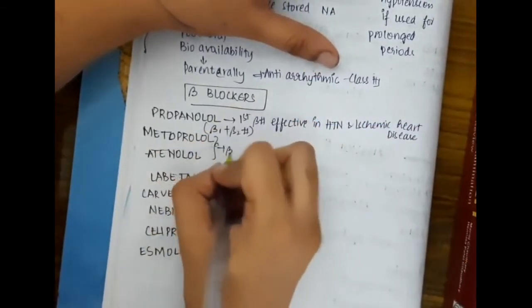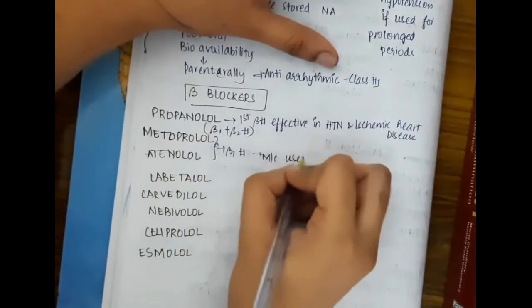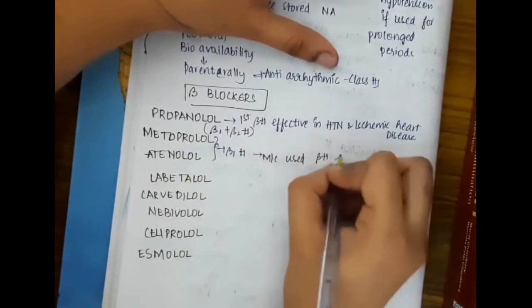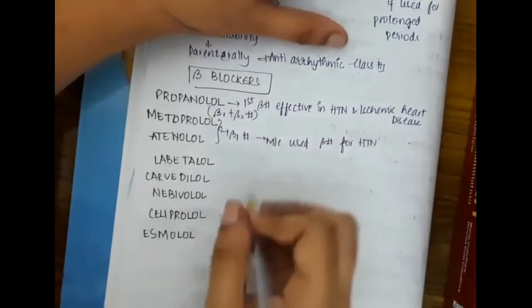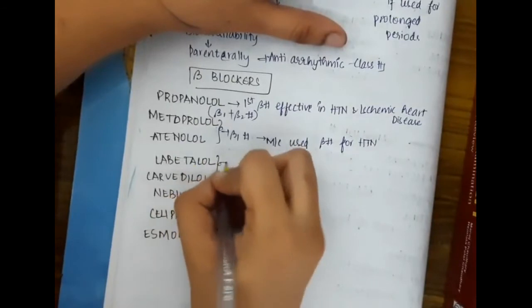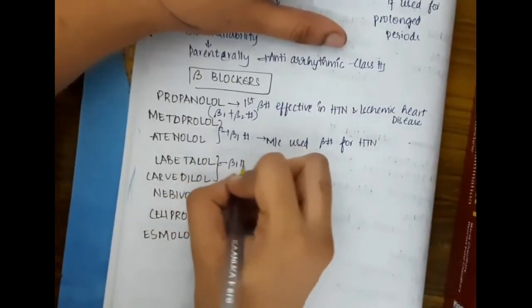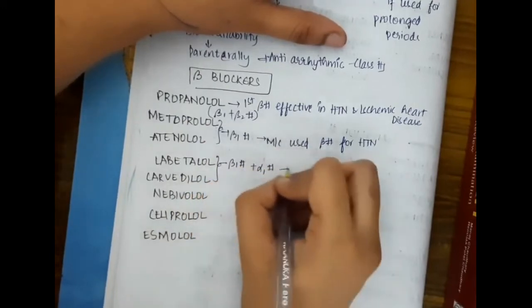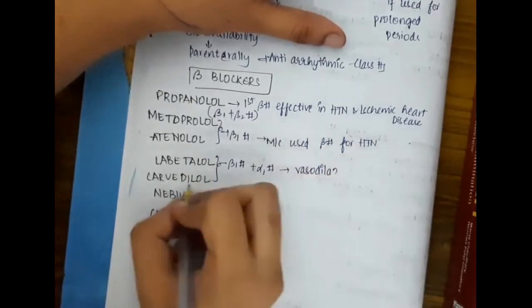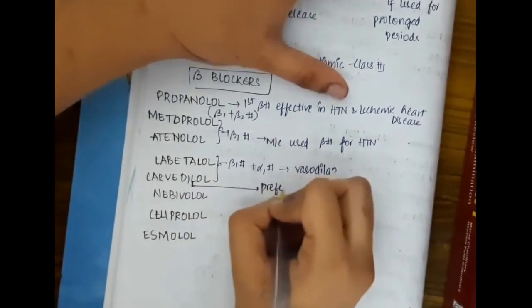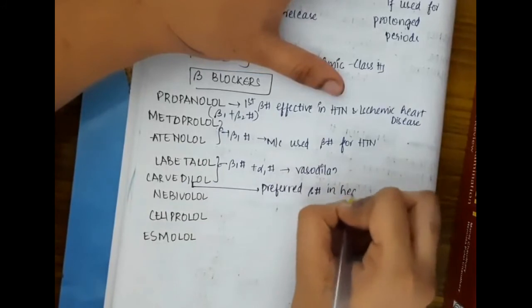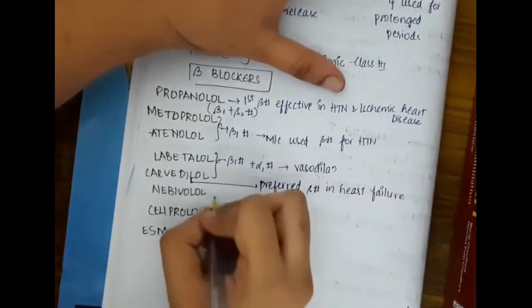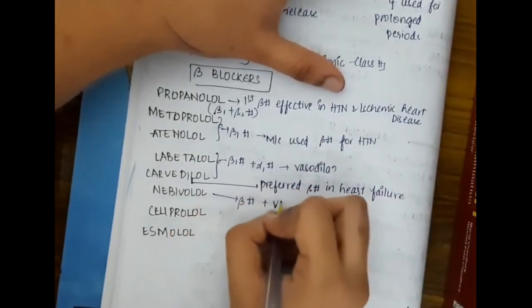Metoprolol and atenolol are selective beta-1 blockers and are the most commonly used beta blockers for hypertension. Labetalol and carvedilol are beta-1 blockers along with alpha-1 blockers, thus causing vasodilation. Carvedilol is the preferred beta blocker in heart failure.